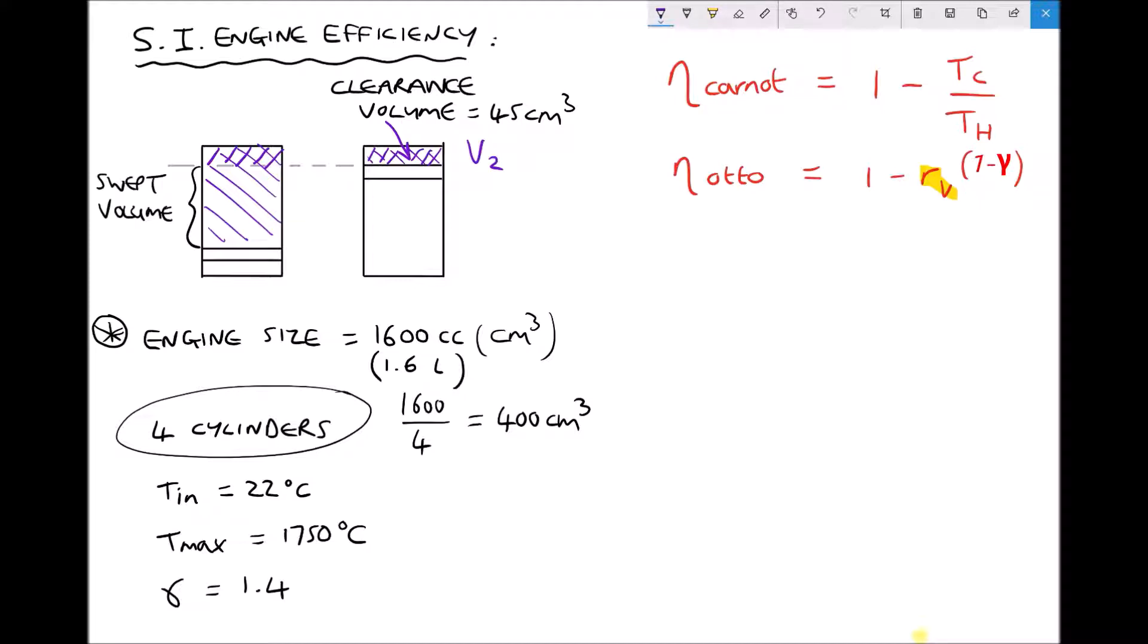Note it's not the swept volume we require, it's the total volume in front of the piston. V1 is going to be the clearance volume plus the swept volume of the cylinder. So now we understand what is meant by engine size, and we know how to determine the clearance volume, swept volume, and the volume in front of the piston when it's in its lowest position.